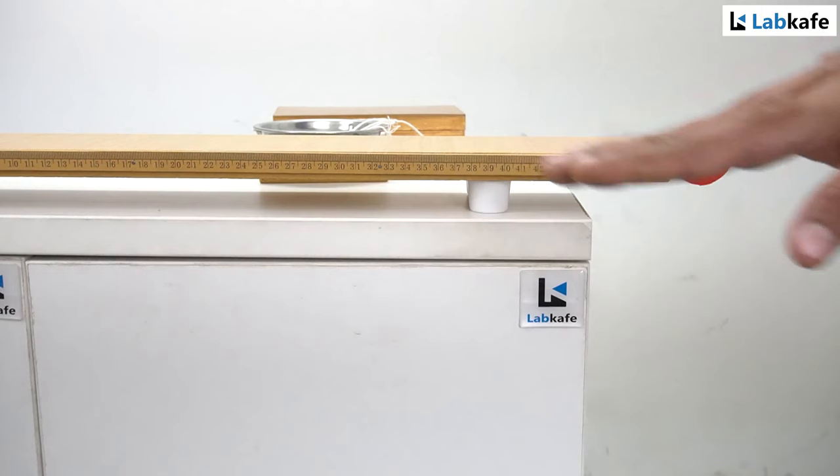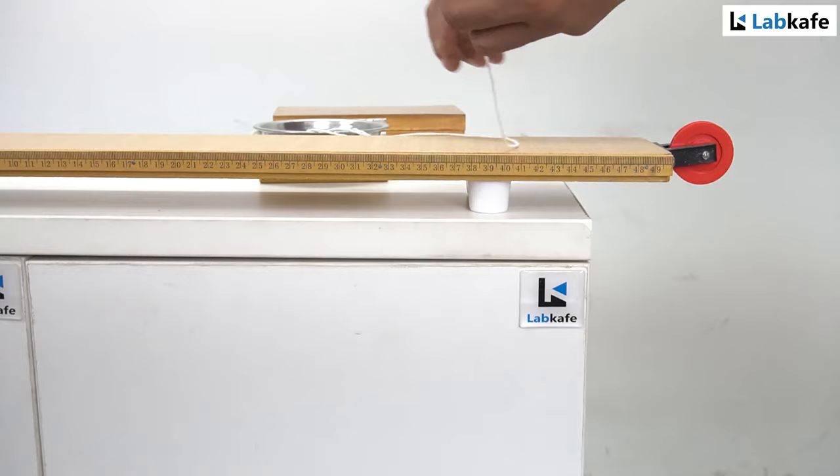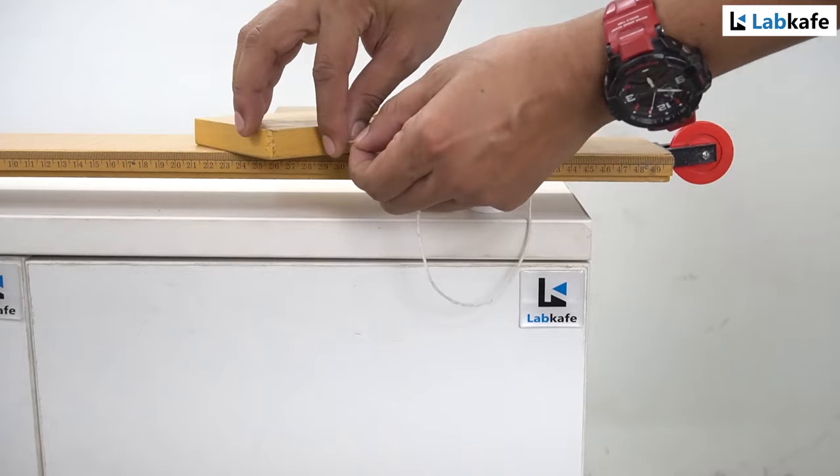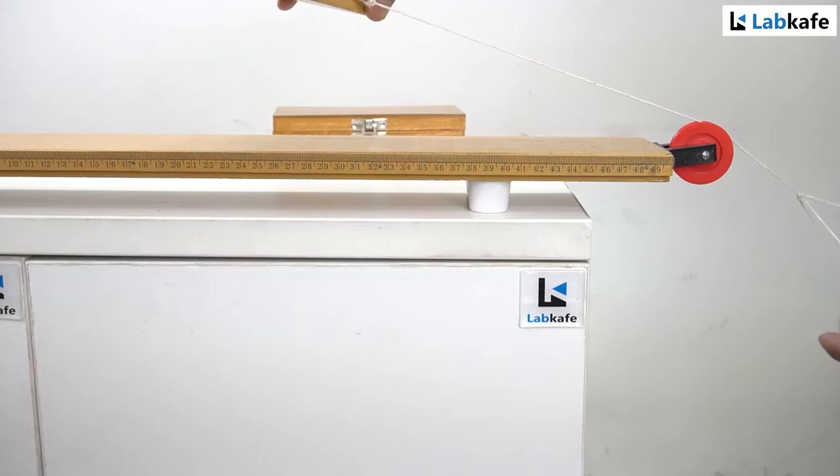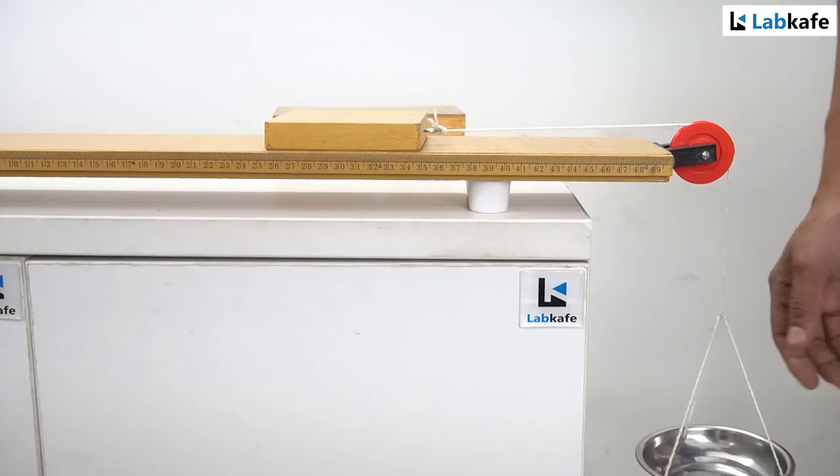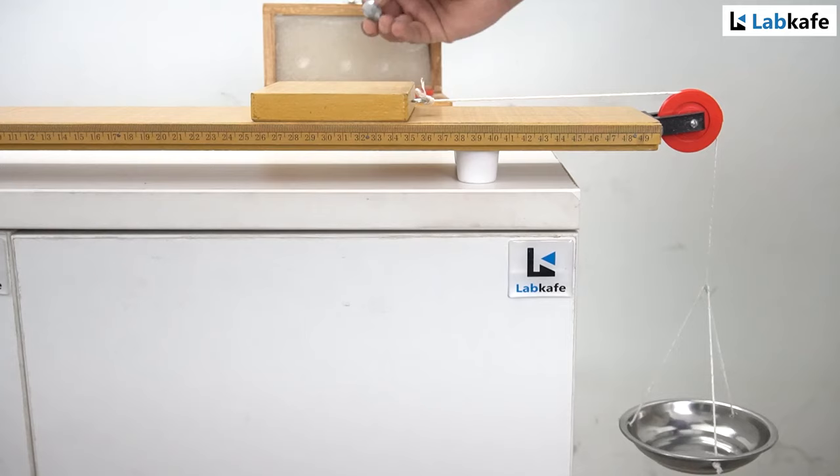First I place the apparatus on the horizontal table. Then check the pulley if it is frictionless; if not, put some oil. Then take the thread fixed with the pan and tie it with the hook of the wooden block. Then place the thread over the pulley and hang the pan. Place the wooden block on the friction apparatus at say 35 centimeters marked on the scale. Make sure that the pan is stable and not touching the table. This is our initial position. Now I will add some weights one by one and each time tap the table gently to observe if the block is just moving or not.